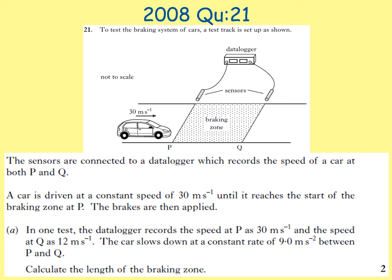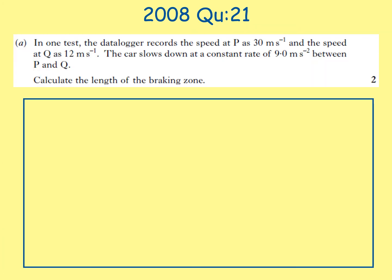To test the braking system of cars, a test track is set up with sensors connected to a data logger which records the speed of a car at both P and Q. A car is driven at a constant speed of 30 metres per second until it reaches the braking zone at P, where the brakes are applied. The data logger records the speed at P as 30 m/s and at Q as 12 m/s. The car slows down at a constant rate of 9 m/s². Calculate the length of the braking zone. Known values: u = 30 m/s, v = 12 m/s, a = −9.0 m/s², find s.